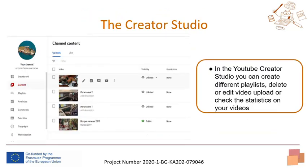In the Creator Studio you have many options available. You can create different playlists, and delete or edit video uploads. You can change whether a video is private, unlisted, or public. From here you can also view different statistics about your videos: views, channel subscribers, reach, engagement, subscriber demographics including age, gender, and location. You can even see which other channels your subscribers follow.